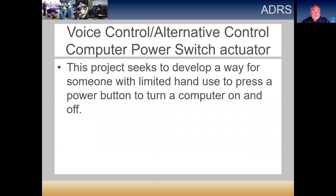The next item is for someone with complete paralysis who has difficulty pressing power buttons on computers — desktops or laptops. There are some systems that can be integrated with environmental control, but we're really looking for a standalone mechanism that can be attached to a laptop or desktop to actuate the power button. On the surface it doesn't sound complex, but on a laptop there's not a lot of space to work with, and we just haven't had time to develop something like this.